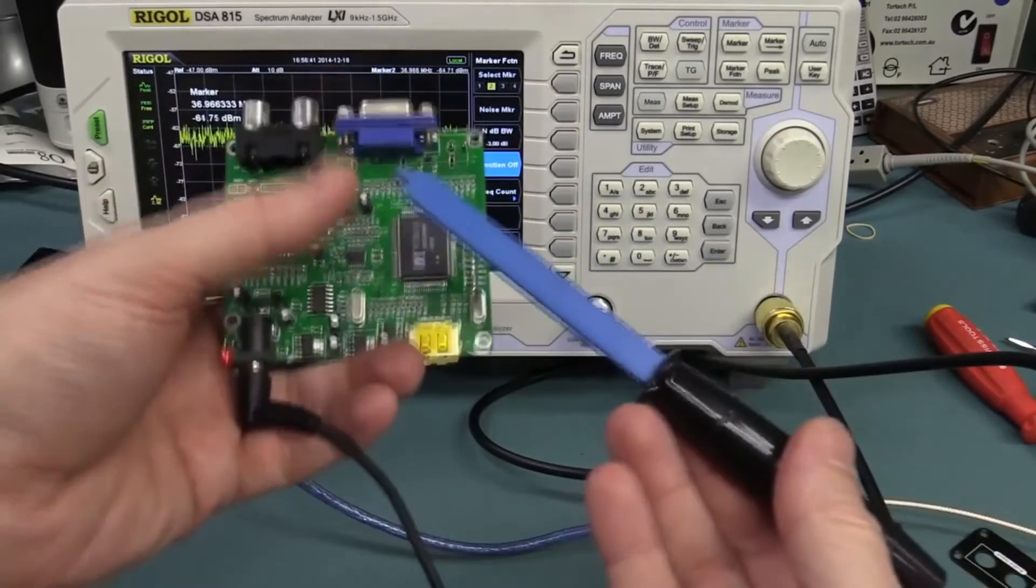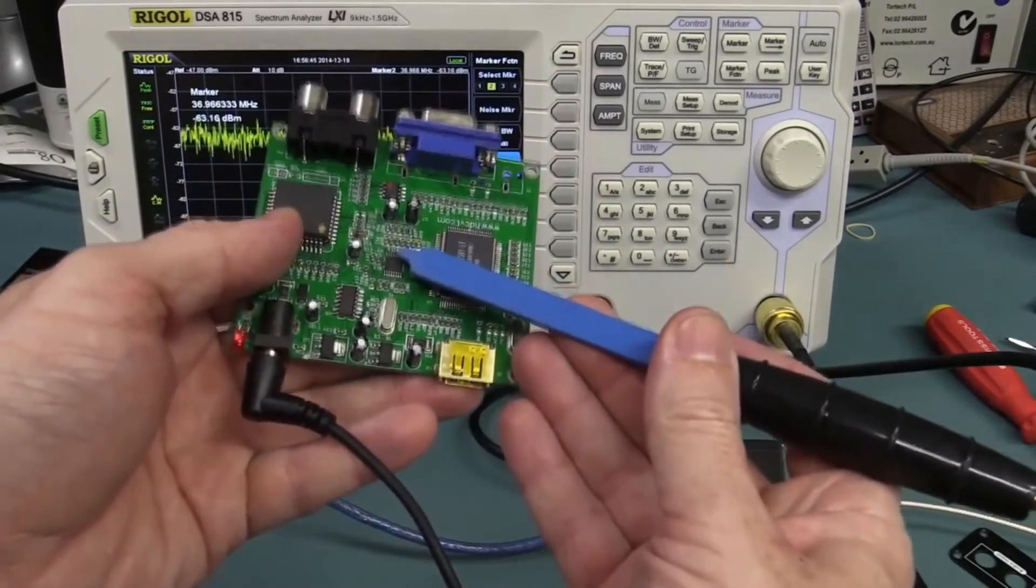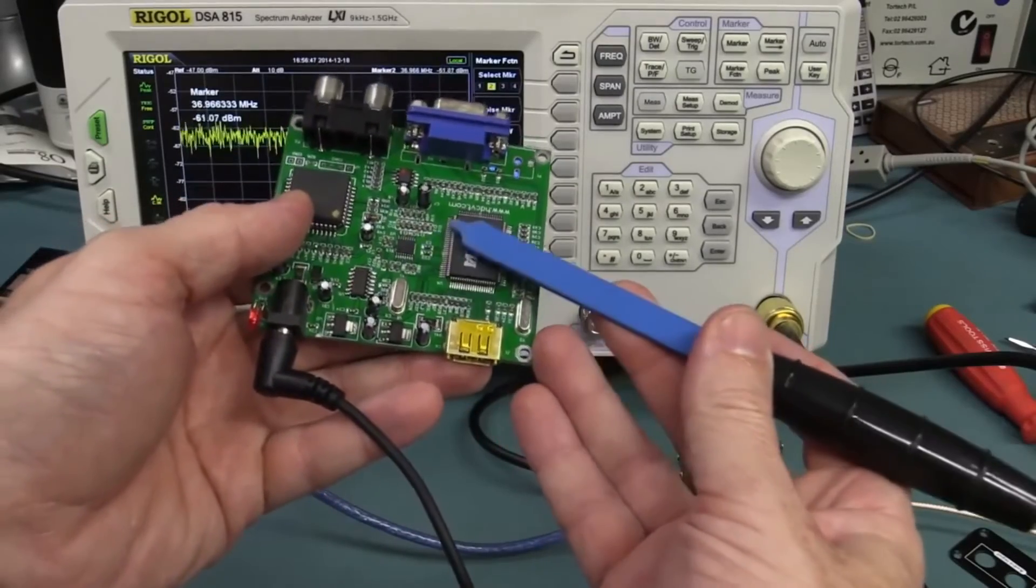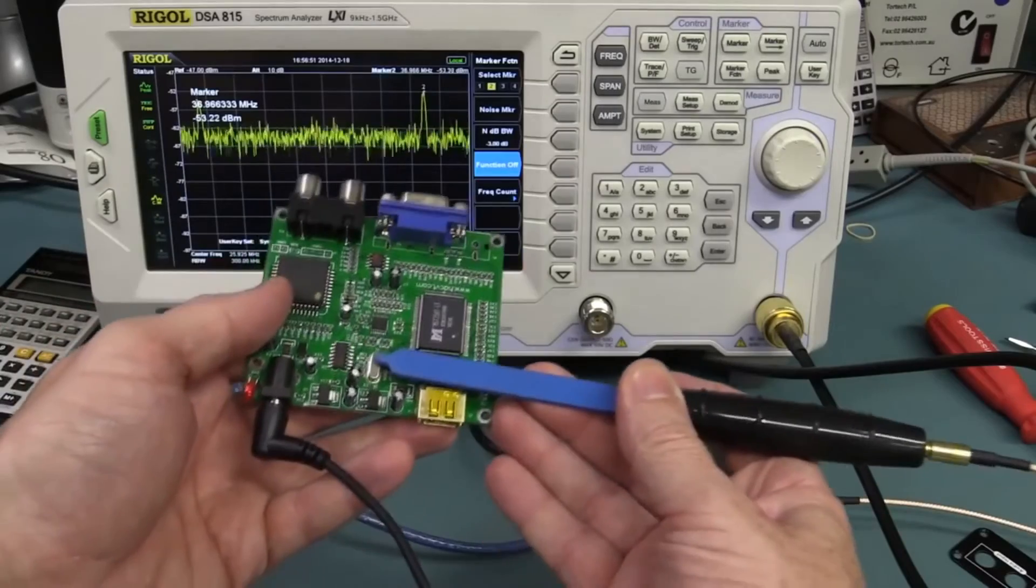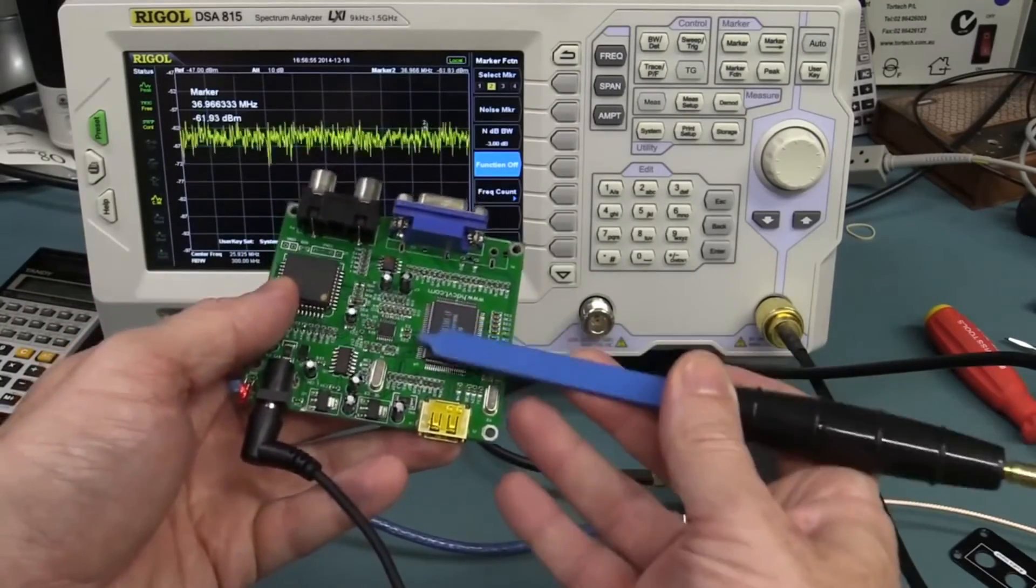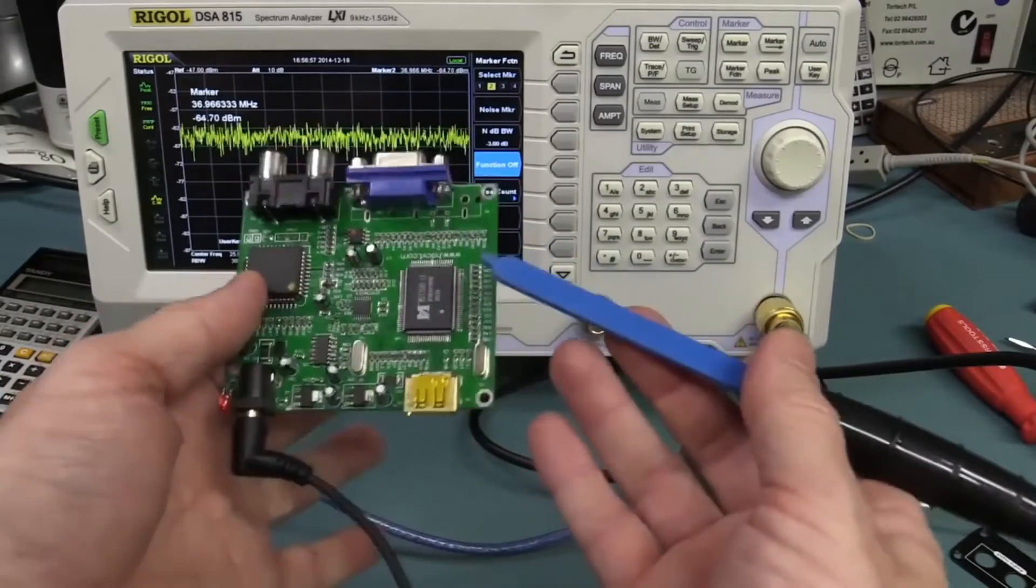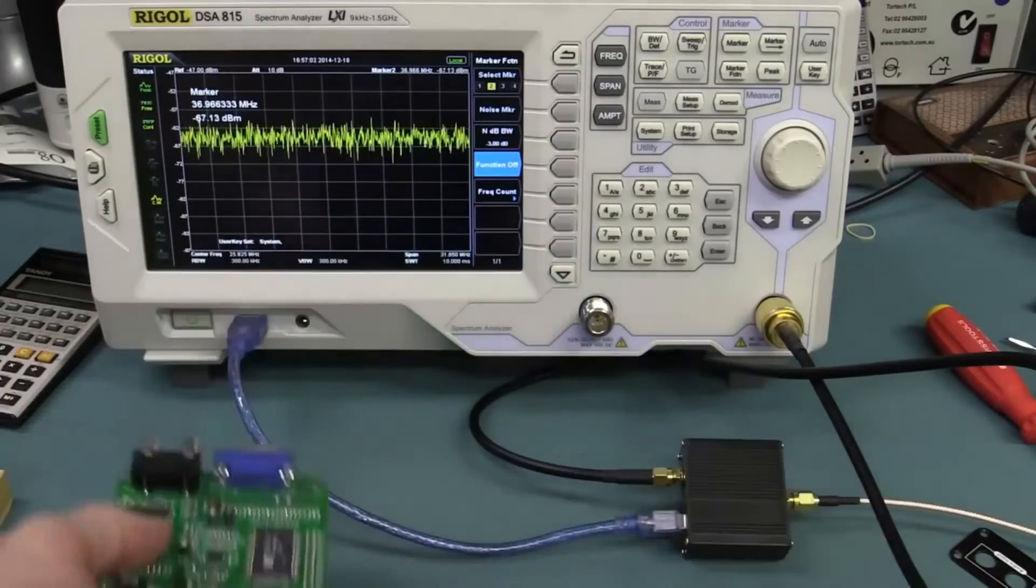Now, the way you typically use these is that your E-field probes are basically for very close direct contact here, which is why we're seeing nothing until we go directly over the crystal there. So you can track down maybe individual pins or individual traces on large-scale stuff. It's harder on really fine surface mount stuff like this to try and pick it up.